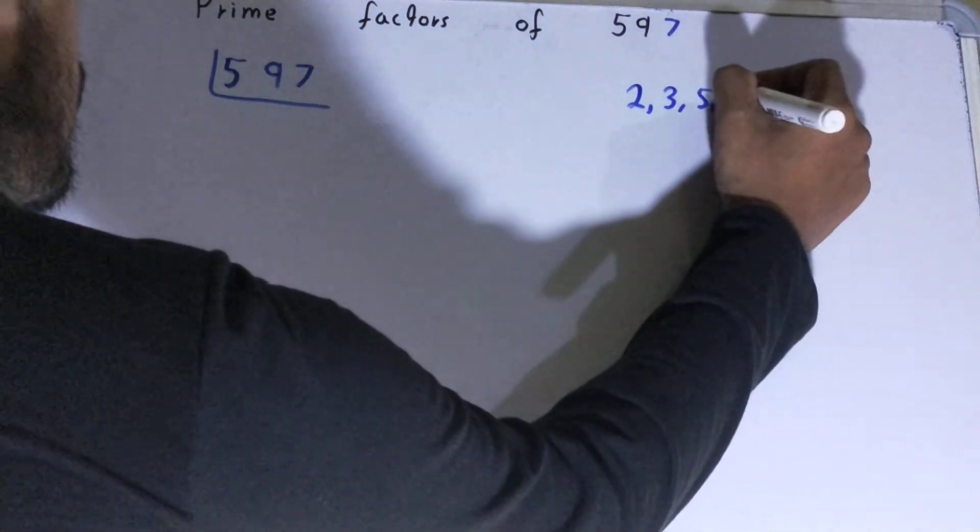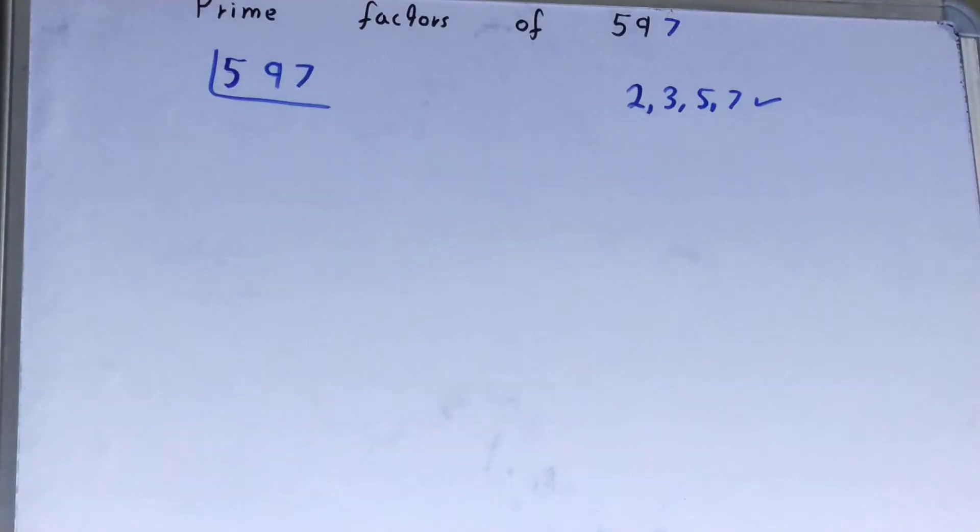Alright, so we will be starting with the lowest prime number we have, that is two. Is the number 597 divisible by two? Clearly not, it is an odd number, right?